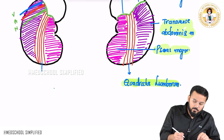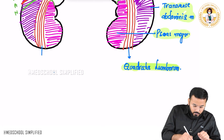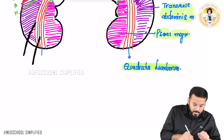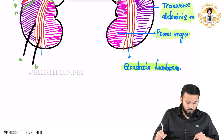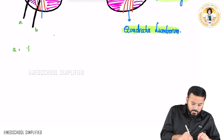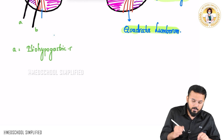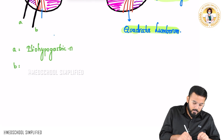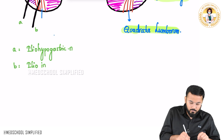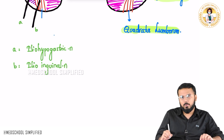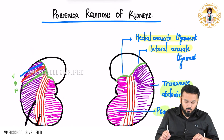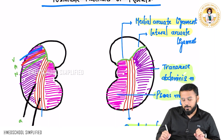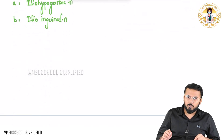Additionally, we have two important nerves coming out. Let us name them A and B. A is called the iliohypogastric nerve, and B is called the ilioinguinal nerve. So these are the posterior relations of the right and left kidney.